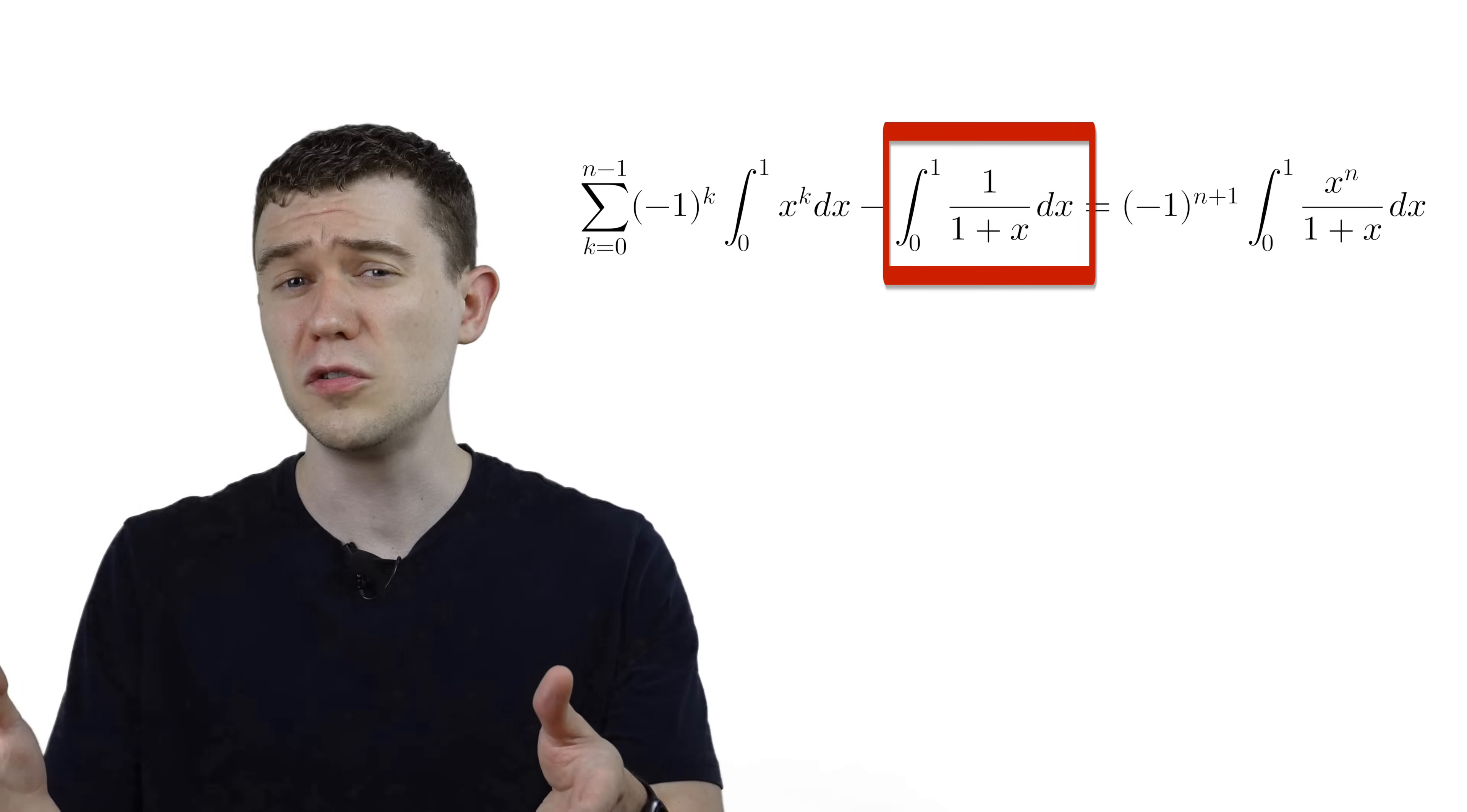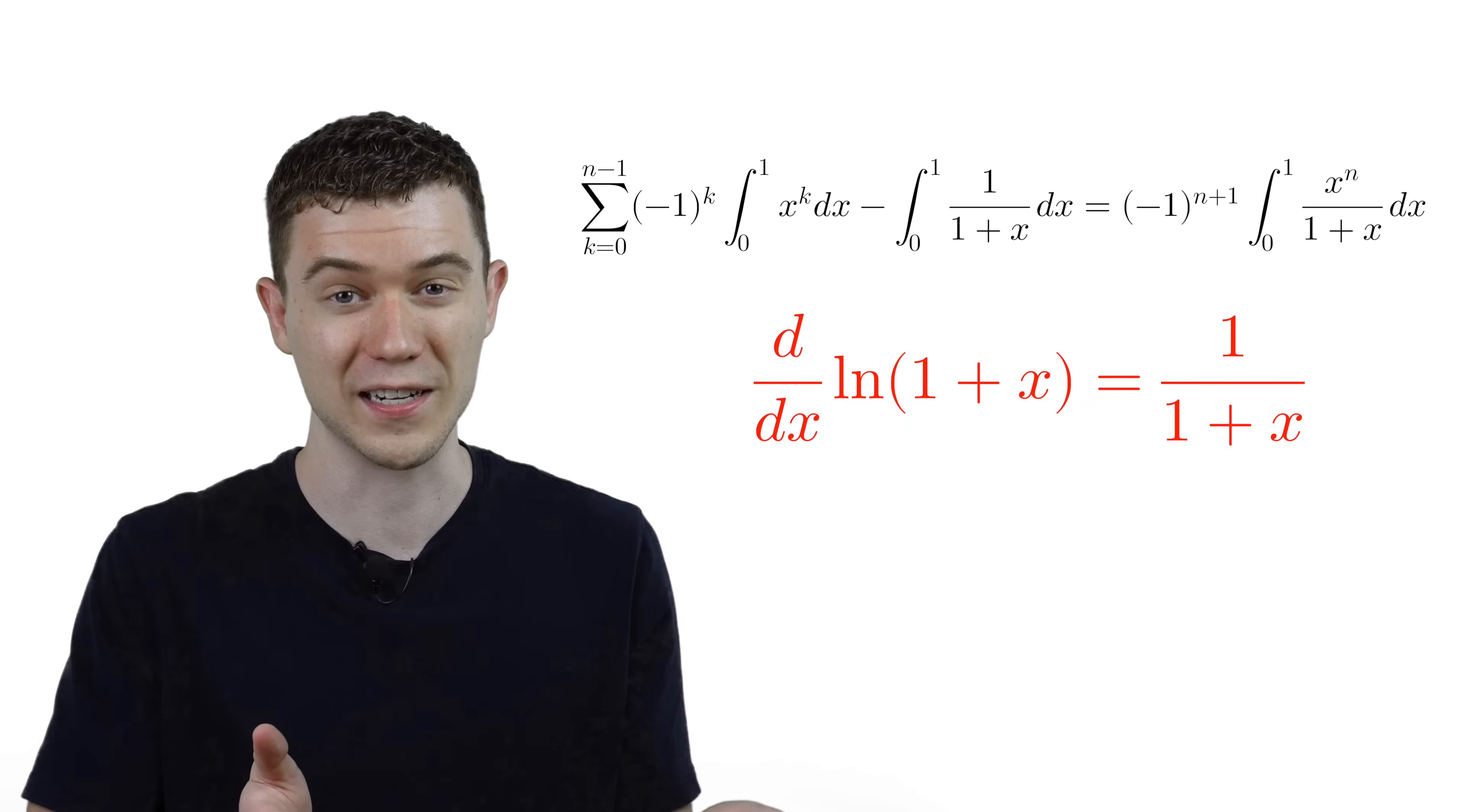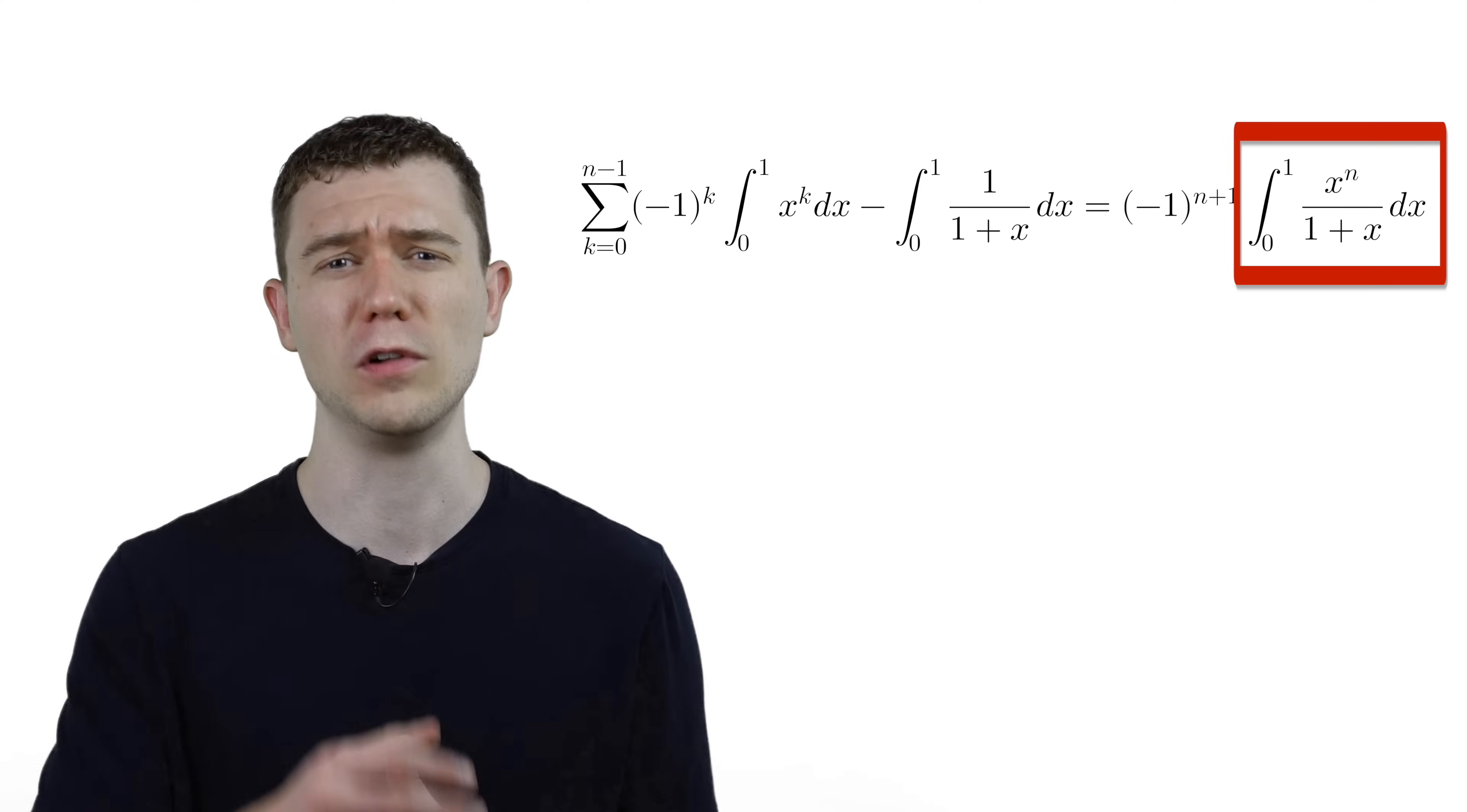You could use a u substitution for this integral, but I think it's easier to just see that if we took the derivative of natural log of x plus 1, it would give us 1 over x plus 1, and so this integral becomes natural log absolute value of x plus 1 from 0 to 1. And this integral, we'll just leave alone for now.